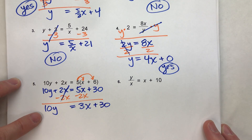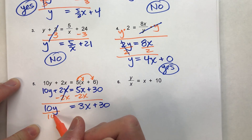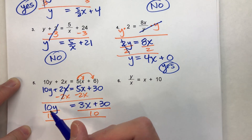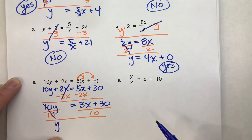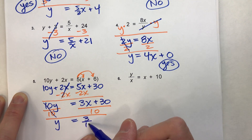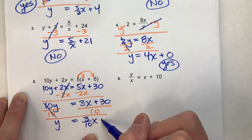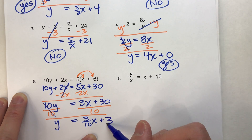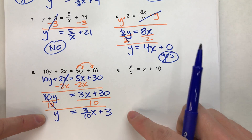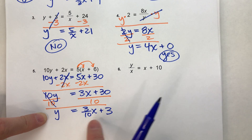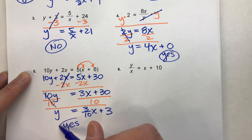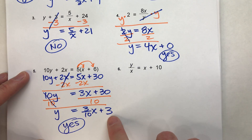Now divide both sides by 10. That gives y equals 3 tenths x plus 3. The question is: is this in slope-intercept form? Yes — y equals something times x plus something. This is linear, with a slope of 3 tenths and a y-intercept of 3.